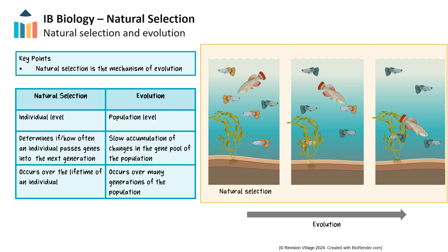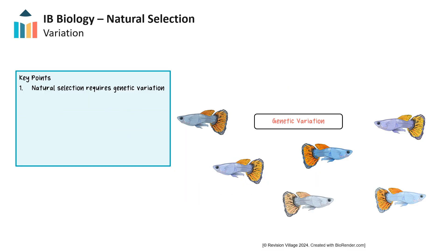Here we would see it as a change in the color of the fish population over many generations. In order for natural selection to occur, there must be several conditions present in the population. First, natural selection requires genetic variation among the individuals in the population. If they were genetically identical, none would have an advantage over any other.